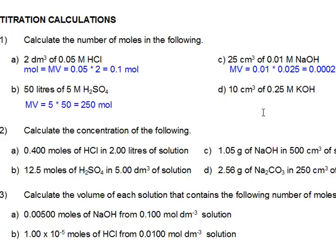10 centimetre cubed is 0.25 molar. Well, molarity times volume equals moles. Molarity 0.25, volume 0.01 in litres of course, and that gives us, well, we move the decimal place 2 places to the left, 0.0025 moles.